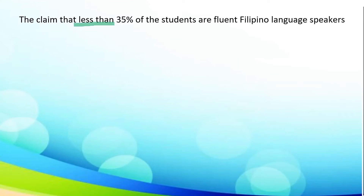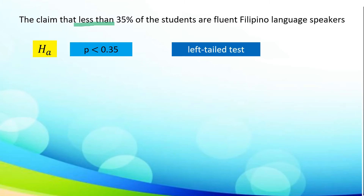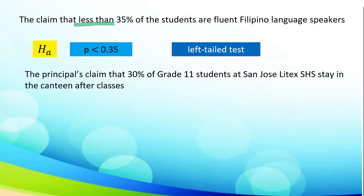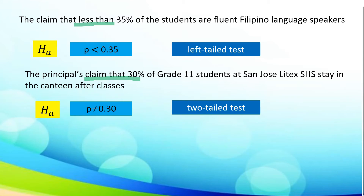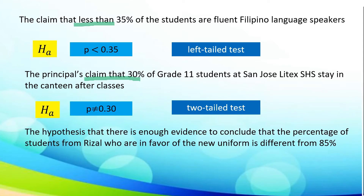Next: the principal's claim is that 30% of grade 11 students at San Salitek Senior High School stay in the canteen after classes. The given claim is 30%. In order to create the alternative hypothesis, this will become P is not equal to 0.30, and this will fall under two-tailed test.